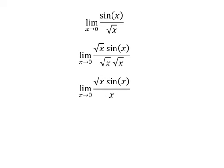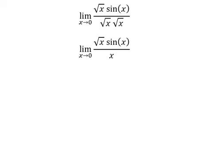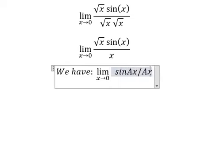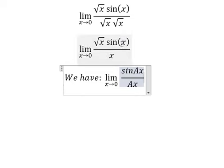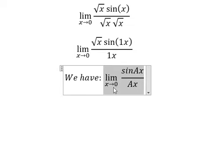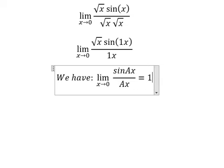In this case, we have the formula here. So A, that is number one. When x approaches zero, sin(Ax) over Ax equals number one.